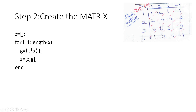When you pick the first element, 1, and multiply with all elements of h(n), you get [1, 2, 1, -1]. When you pick the second element, 2, we write it in the second row — [2, 4, 2, -2]. To achieve this, we write z = [z; g], which appends to the next row in the for-loop. In this way we can generate our matrix. Then we have to sum the right-diagonal elements, which I already explained in my previous video.